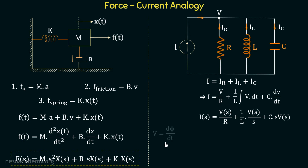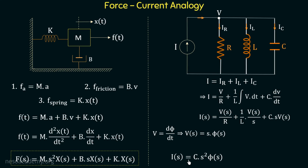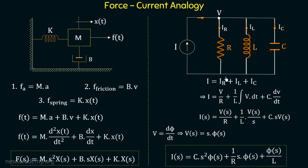To rearrange, we use Faraday's law: V = dΦ/dt. According to Faraday's law, voltage is the rate of change of flux with respect to time. Taking the Laplace transform gives V(s) = s·Φ(s). Replacing V(s) with s·Φ(s) in the electrical equation, we get I(s) = C·s²·Φ(s) + (1/R)·s·Φ(s) + Φ(s)/L. This is the rearranged equilibrium equation for the electrical network.